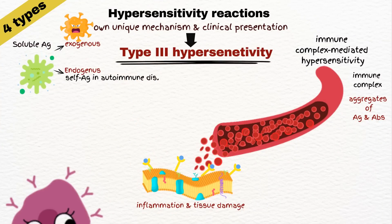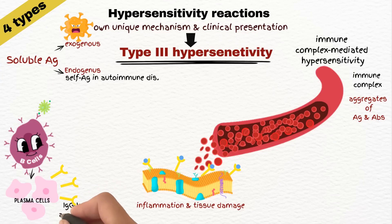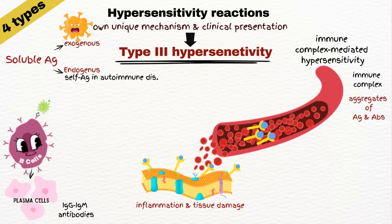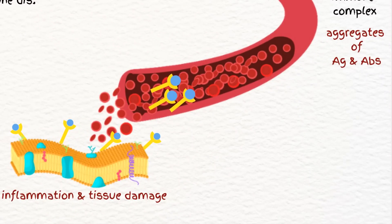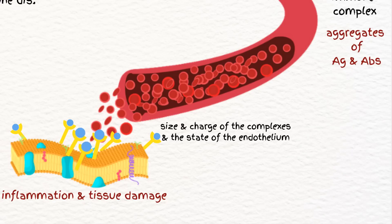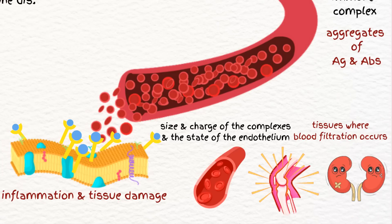B cells recognize these soluble antigens, leading to their activation and differentiation into plasma cells. Plasma cells produce antibodies, usually immunoglobulin G or immunoglobulin M, that bind to the soluble antigens in the bloodstream, forming immune complexes. These complexes circulate in the bloodstream and, due to factors such as size, charge, and the state of the endothelium, are deposited in tissues where blood filtration occurs, such as the kidneys, joints, and blood vessel walls.